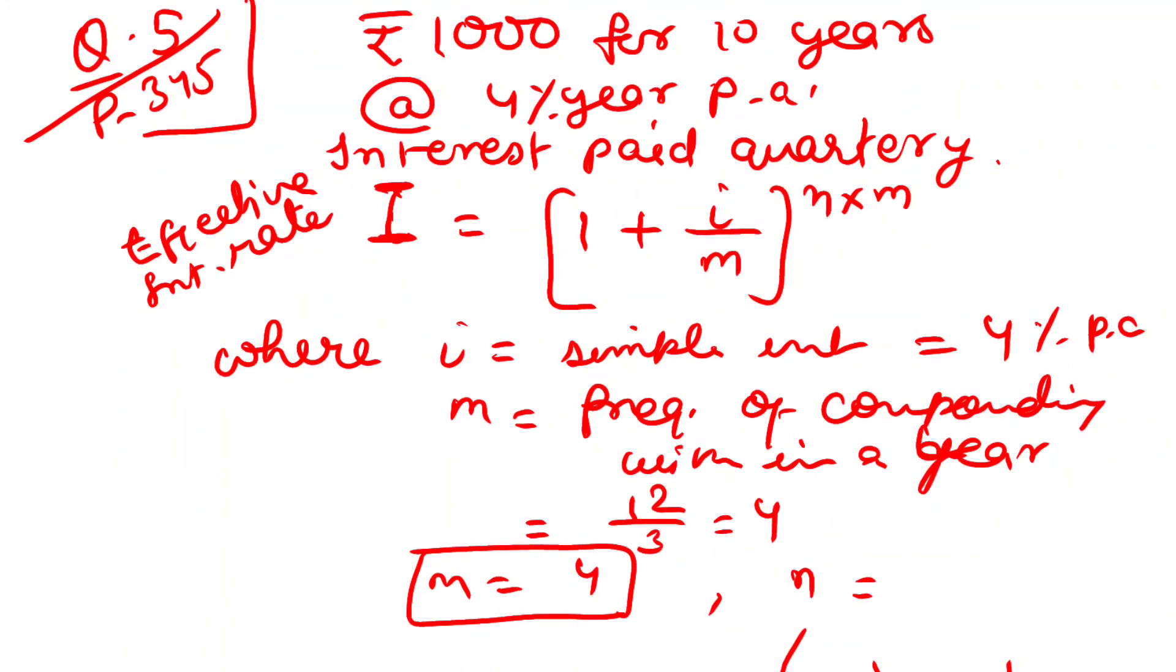N is 10 years. Now you need to find the future value using the formula: F equals P times (1 plus i by m) to the power n times m. This is your interest part calculation.